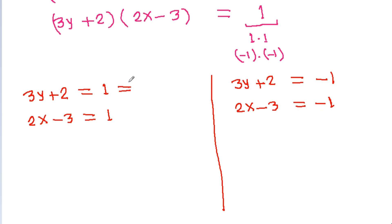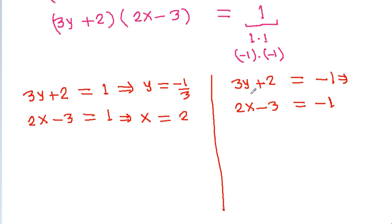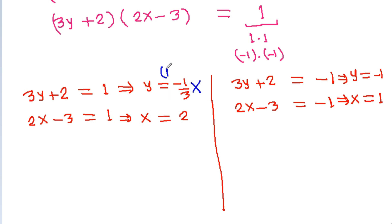From Case 1, we can get 3y = -1, so y = -1/3. And 2x = 4, so x = 2. From Case 2, we can get 3y = -3, so y = -1. And 2x = -1 + 3 = 2, so x = 1. And y = -1/3 is not possible because it is not an integer.